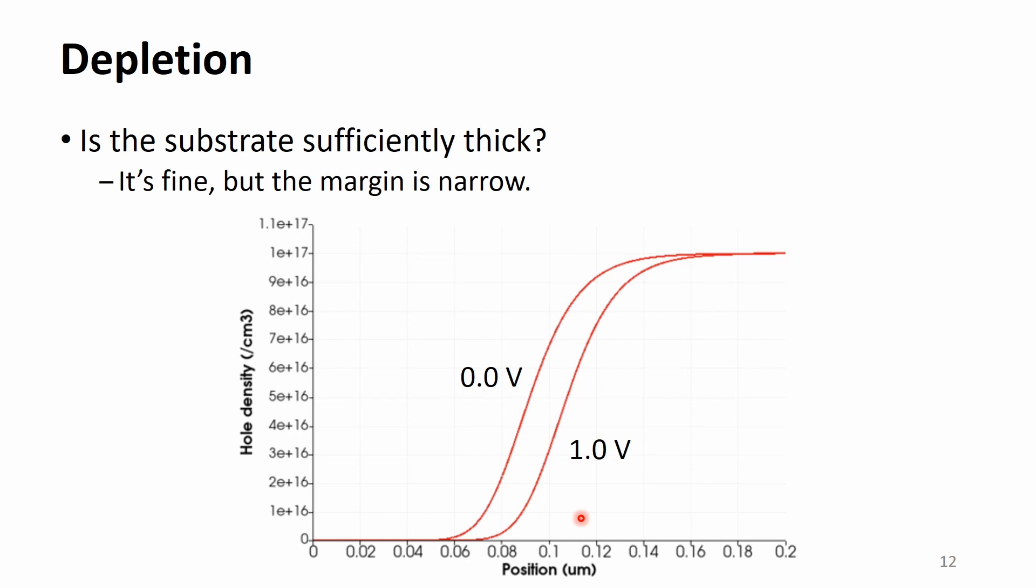When we simulate the planar MOS structure, we must ensure that the substrate is sufficiently thick. How about our 200 nanometer thick substrate? This figure shows hole density at two gate voltages. As expected, the depletion layer becomes wider. Still, at the end, the hole density approaches to the P-type doping concentration. So, it's fine. But the margin is narrow.